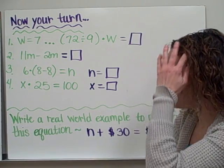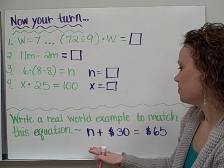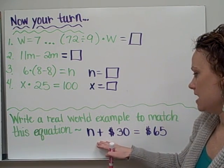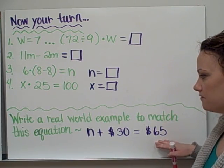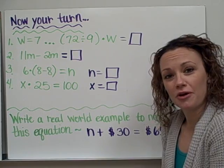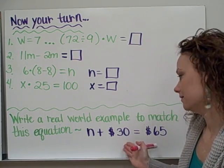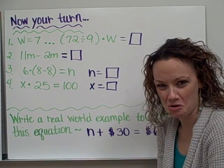And as a challenge, what I would like you to do is try to write a real world example. So in words, a type of word problem that would show n plus 30 equals 65. So think of an example of parents or friends doing something worth money that would equal to 65 dollars. And just give me your best example on your homework sheet.